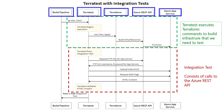Let's review the flow. It kicks off with GoTest — that's the first part of the pipeline execution. Once it does that, TerraTest will automatically do an init, plan, and apply. That's going to kick off the Terraform modules to execute and build out the infrastructure, which means we're going to provision an app service.